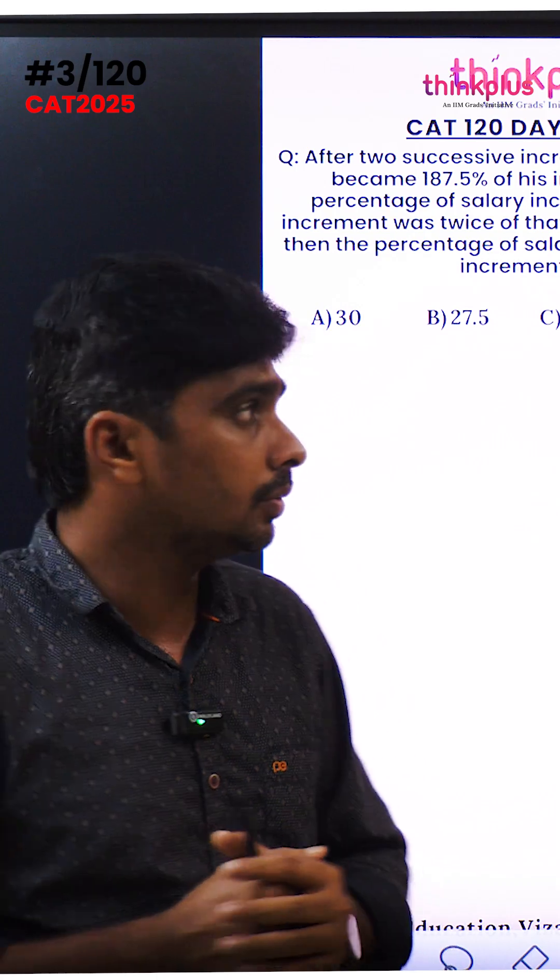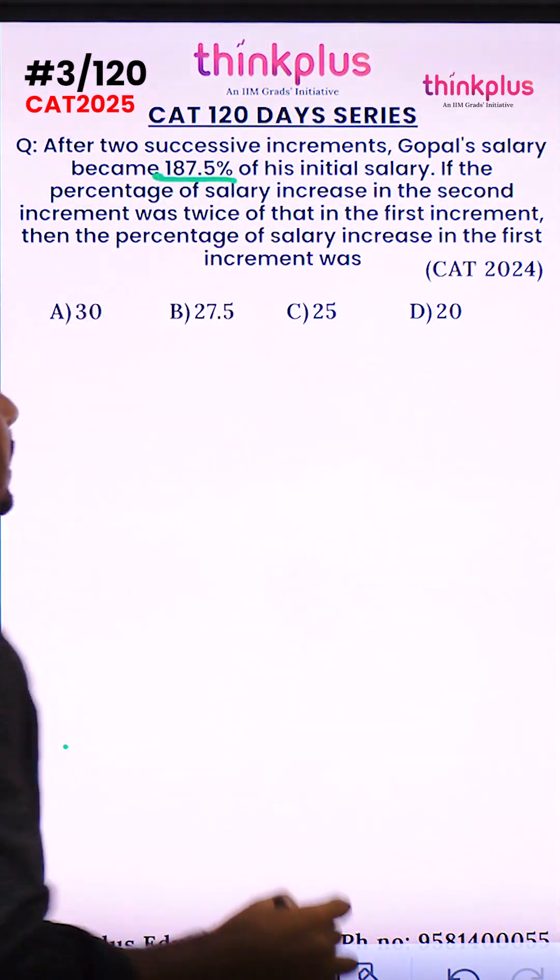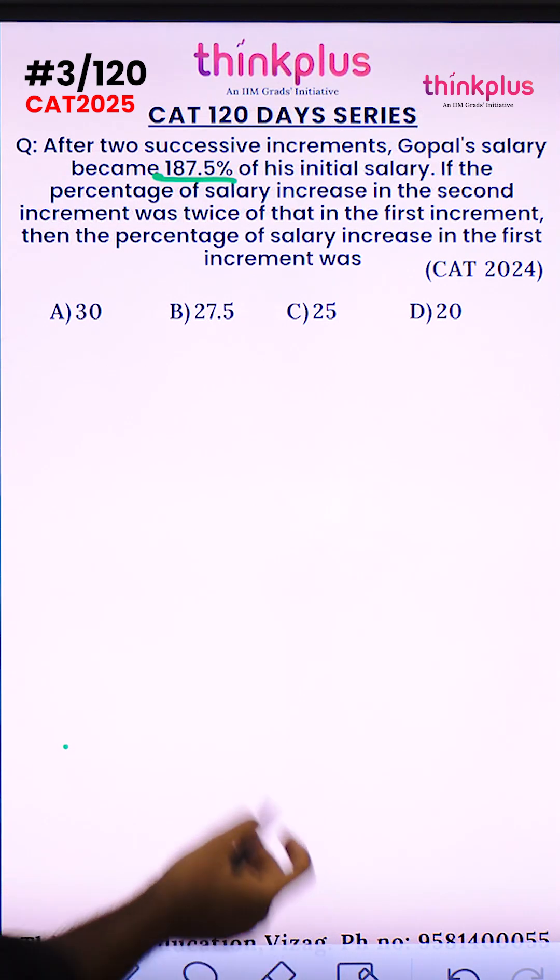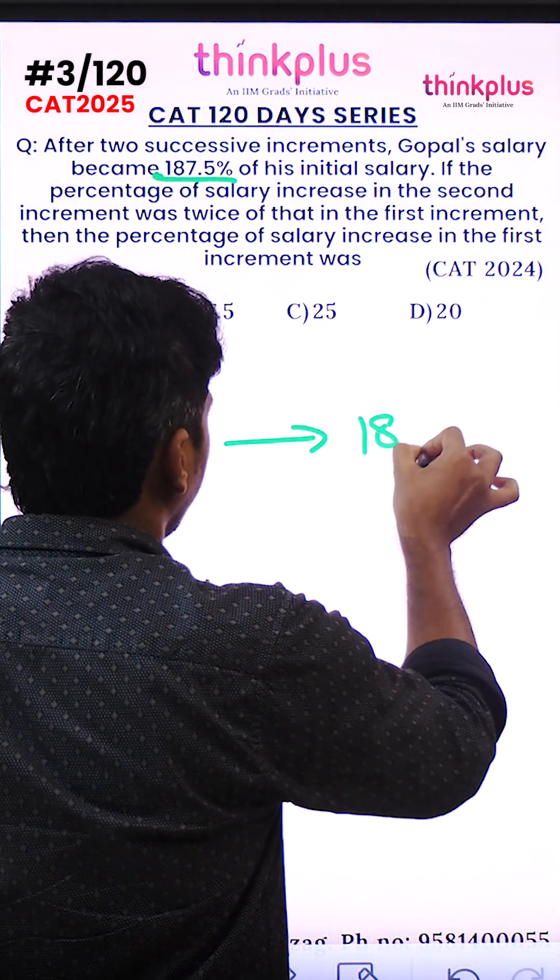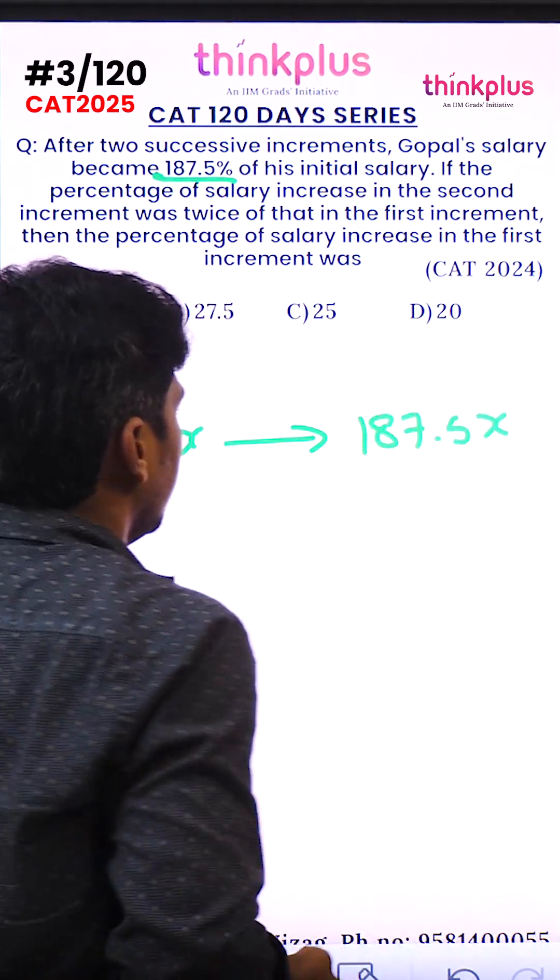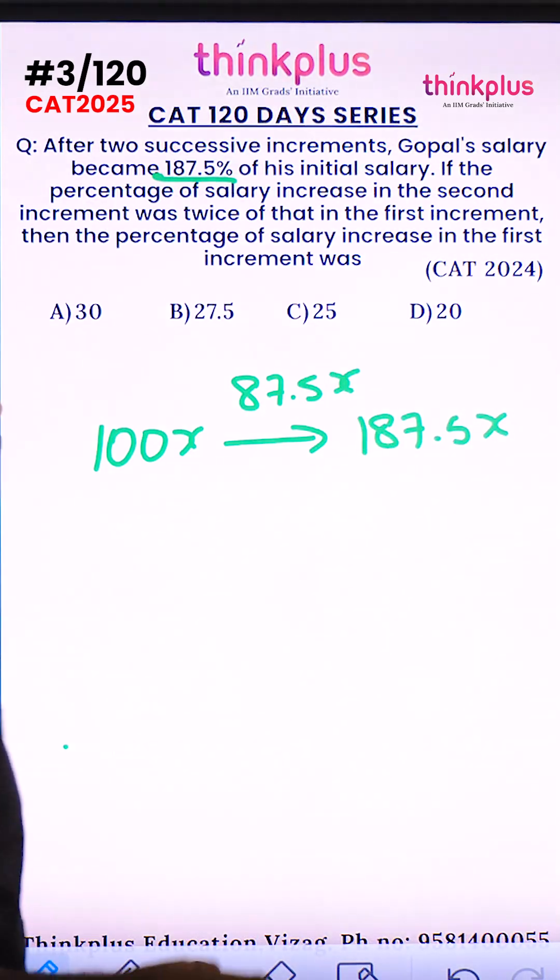Let's look at this CAT 2024 question. After two successive increments, Gopal's salary became 187.5% of his initial salary. So initial salary is 100x and final salary is 187.5x. The effective increment is then 87.5x.